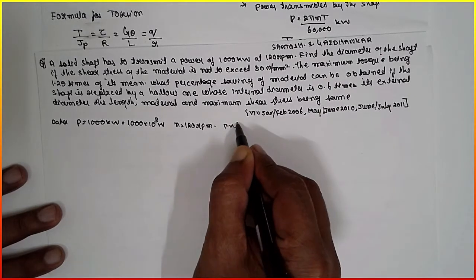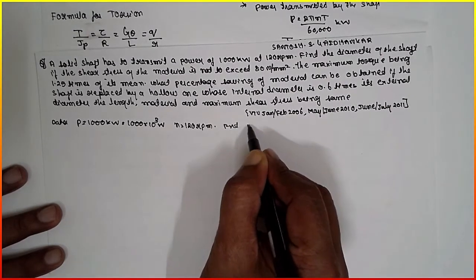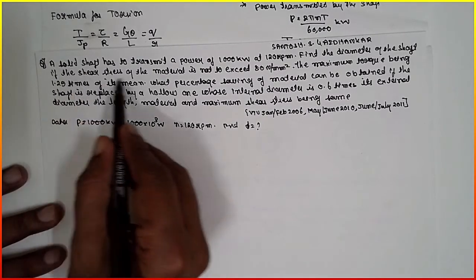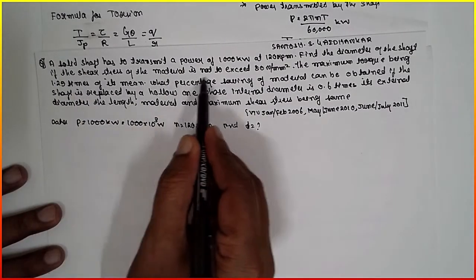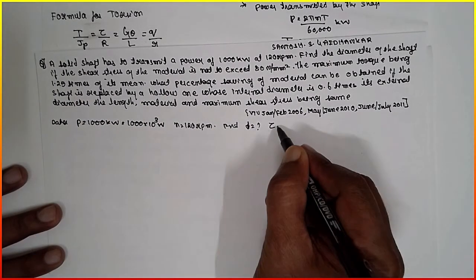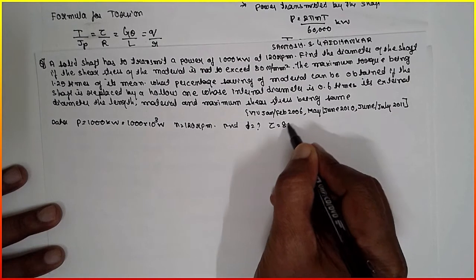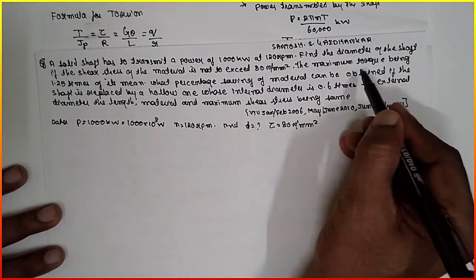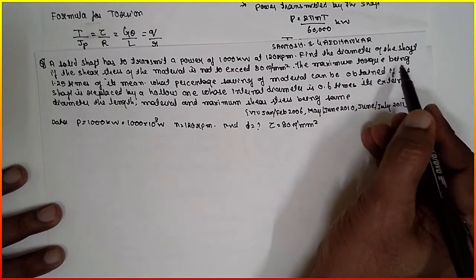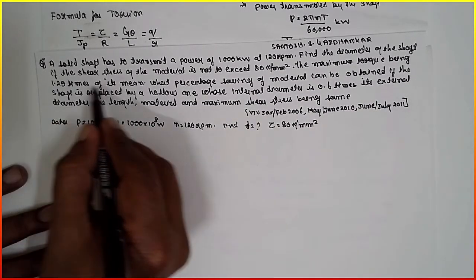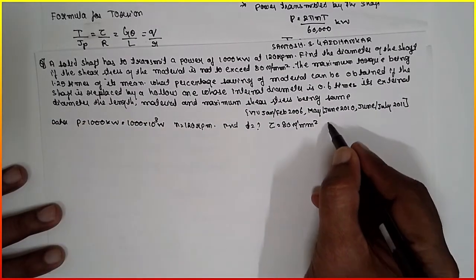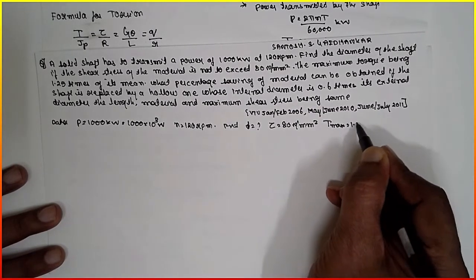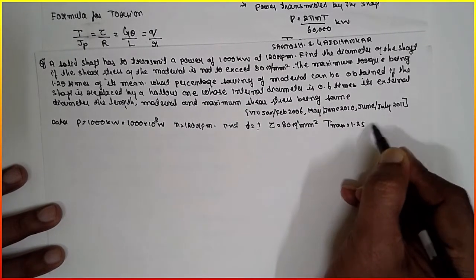We have to find the diameter of the solid shaft. The shear stress of the material is not to exceed 80 newton per mm squared — tau is equal to 80 N/mm². The maximum torque being 1.25 times the mean torque: T_max = 1.25 × T_mean.